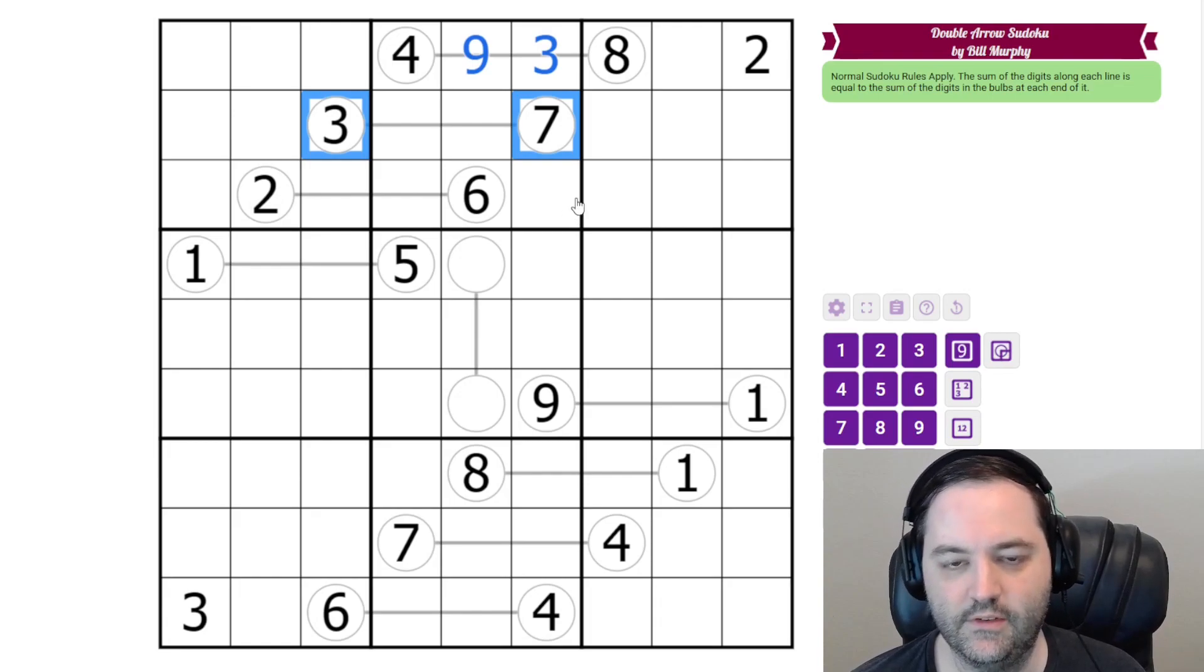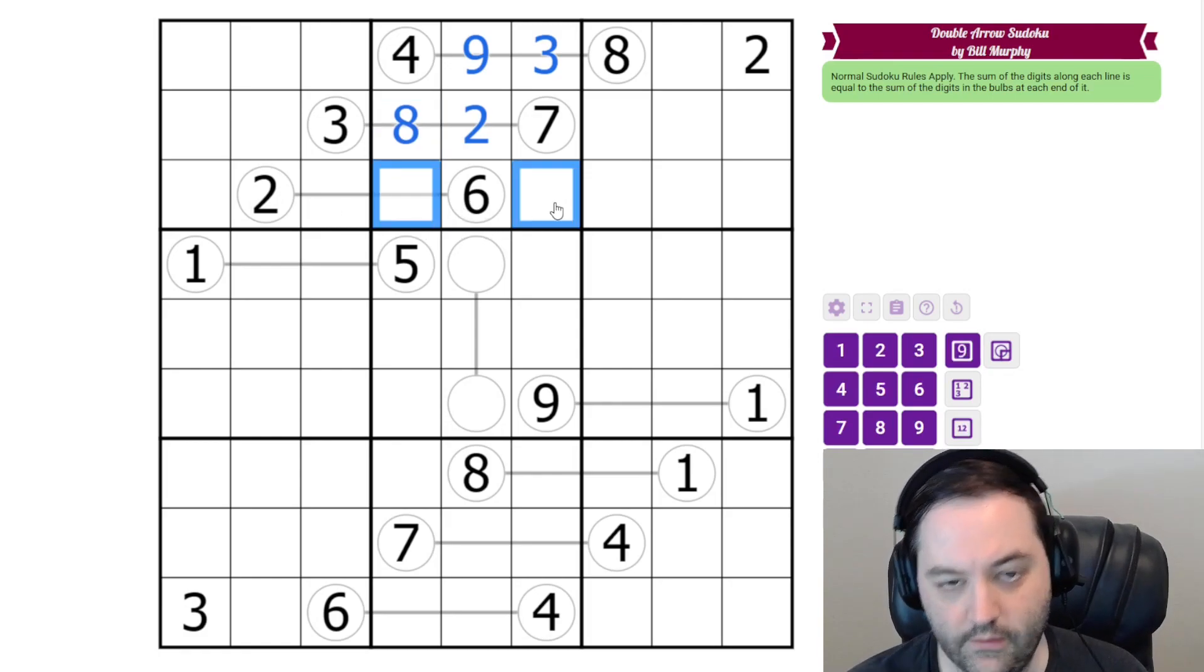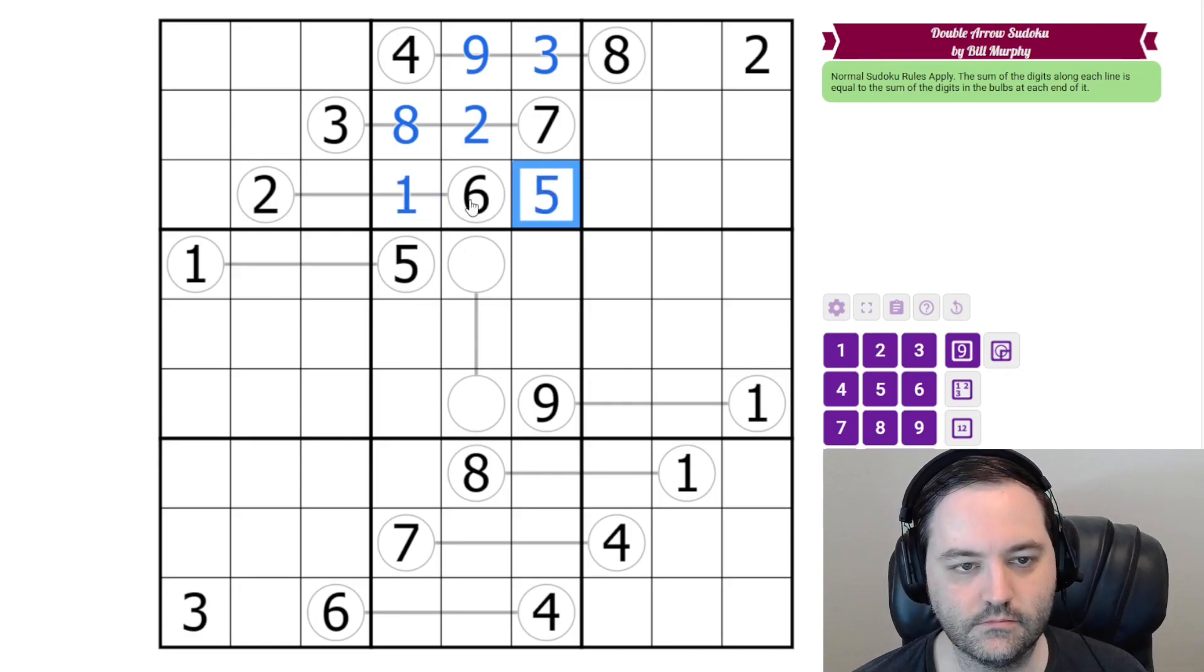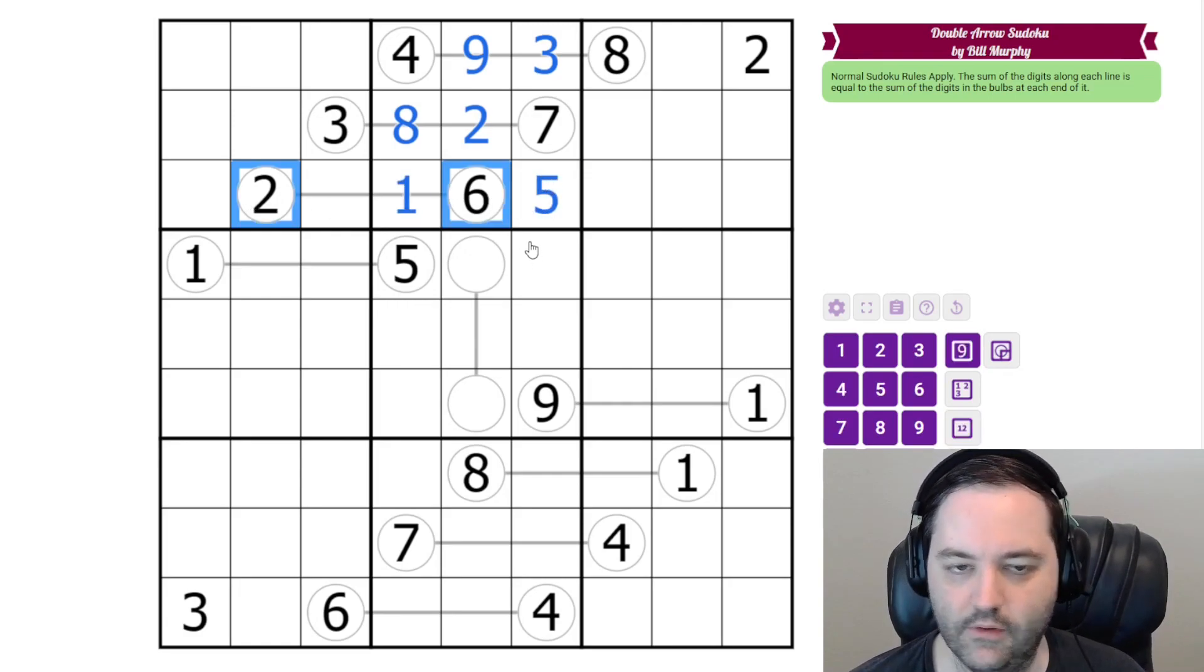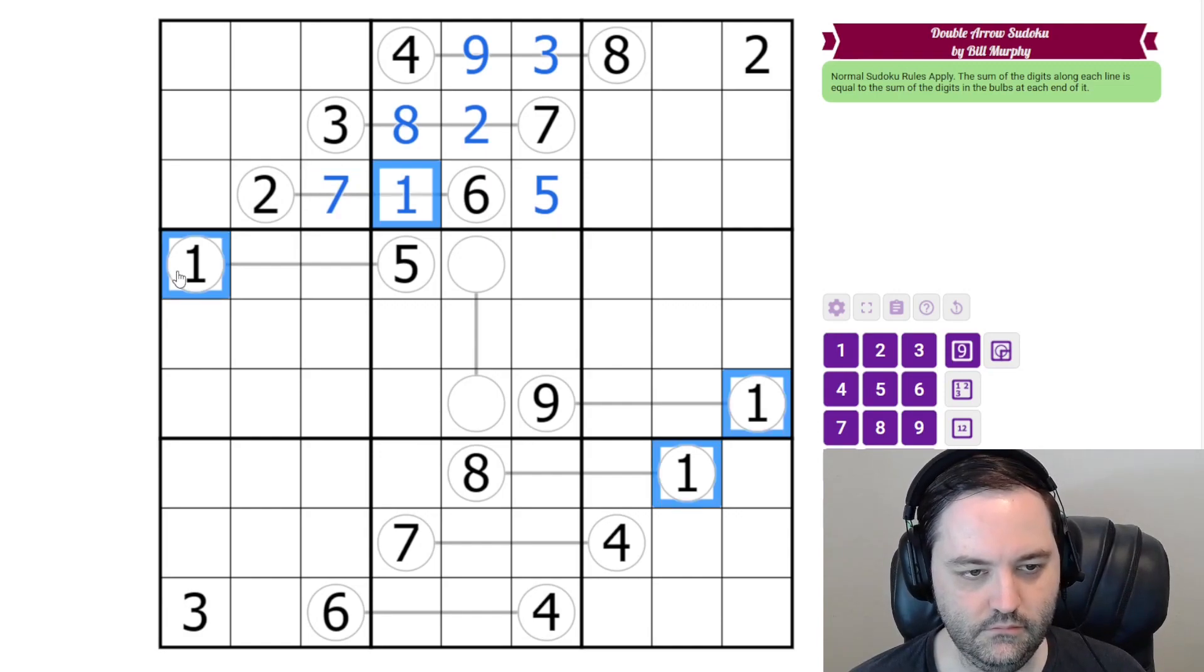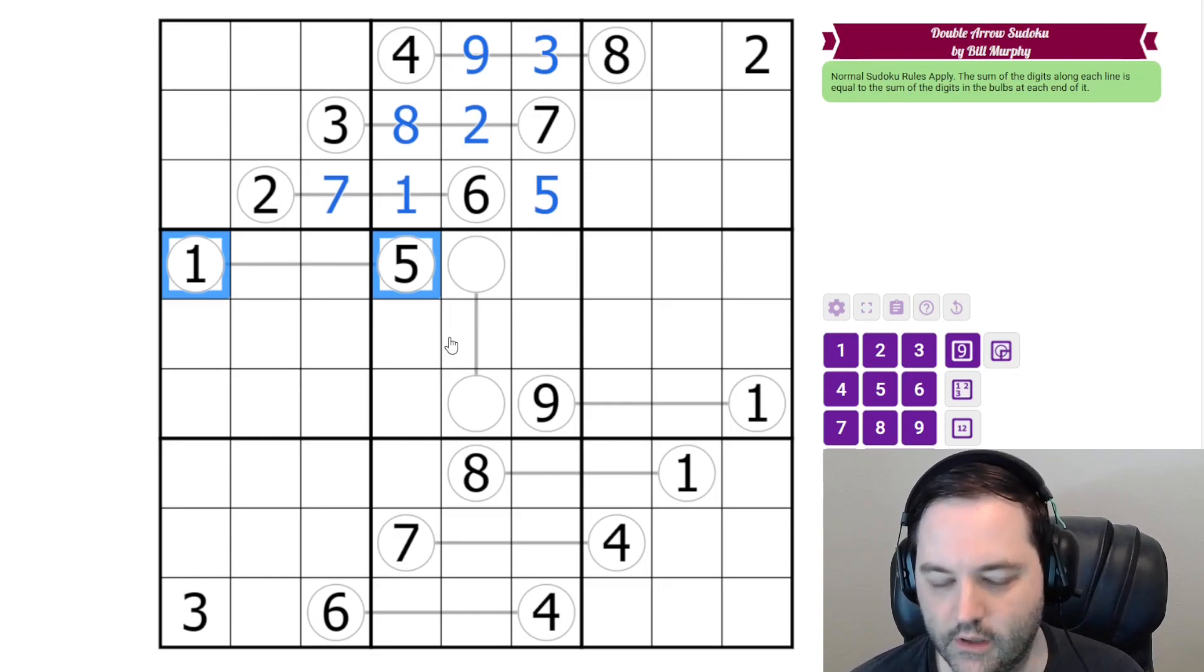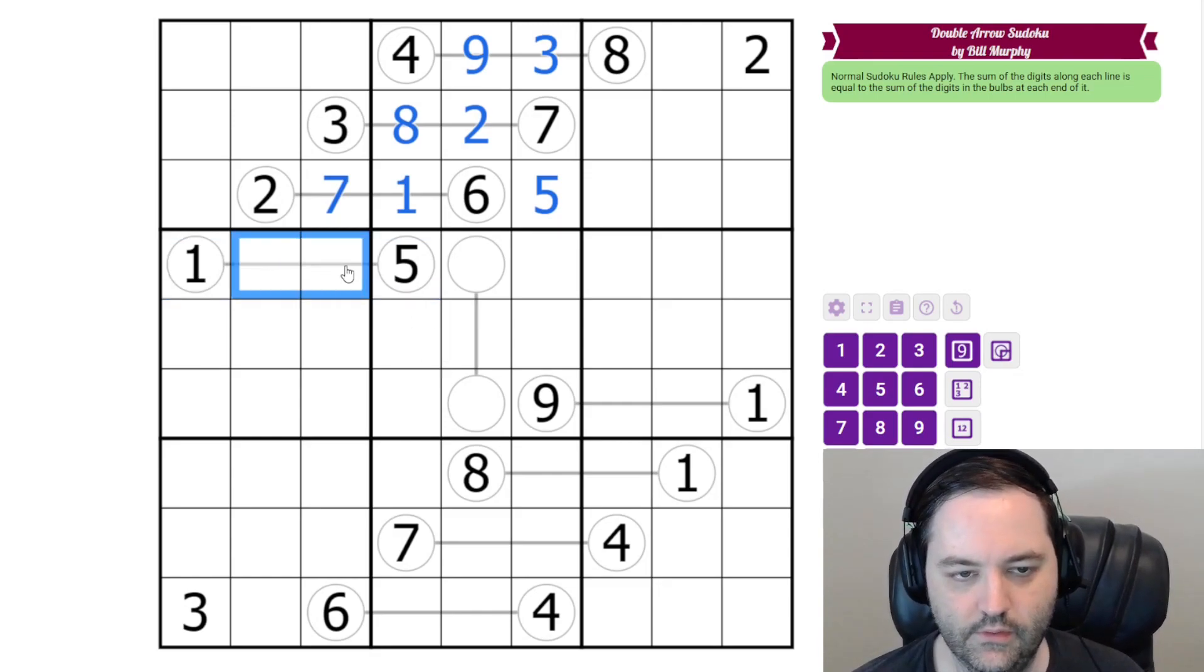Here we have 3 and 7, summing to 10. We can't use 3, 7. We also can't use 4, 6, or 1, 9. So this is 2, 8. There's an 8 here. And then we're left with 1 and 5 in the box. The 5 tells us the order. And now here we have a sum of 8, so to get to 8 with a 1, we need 7. Here we have 6, 1 plus 5. The only other way to do 6 in two cells is 2, 4.